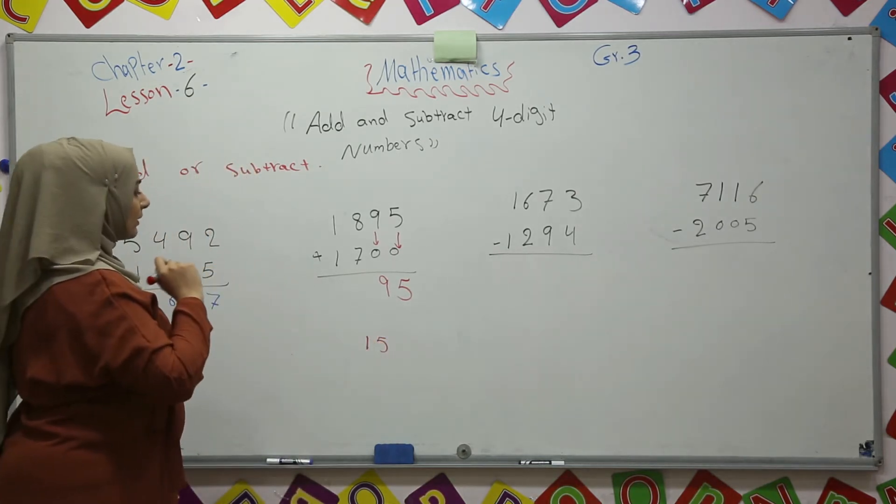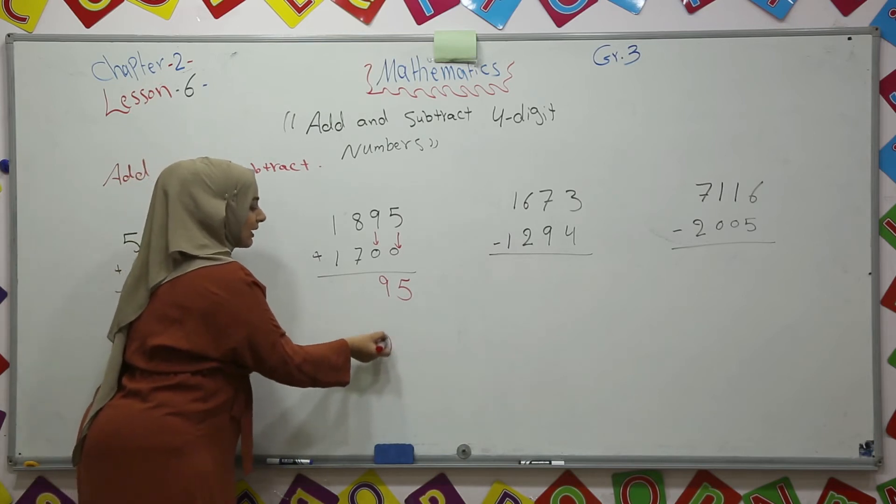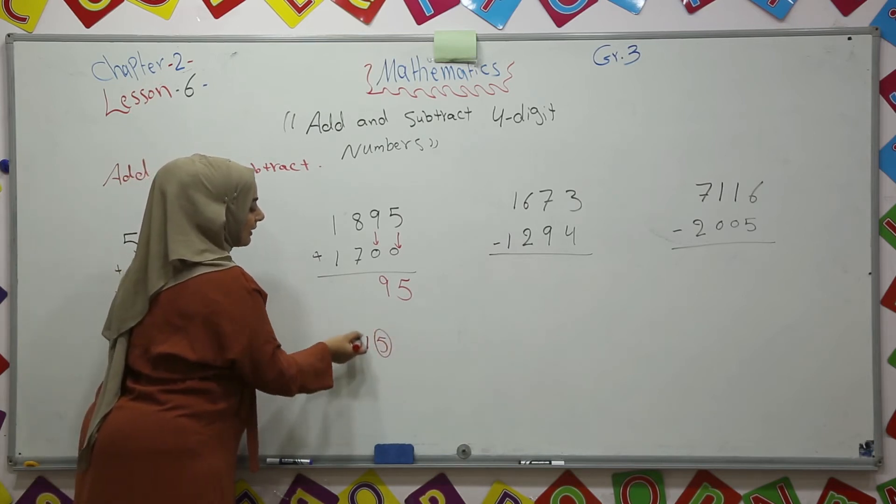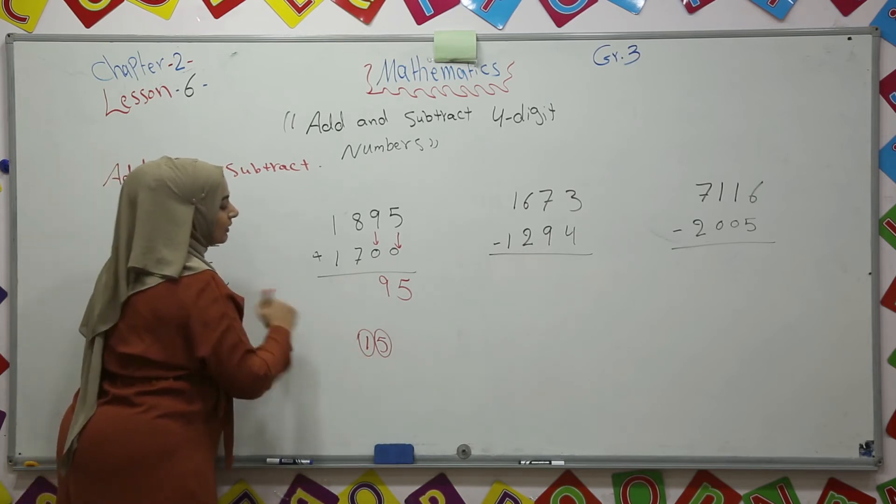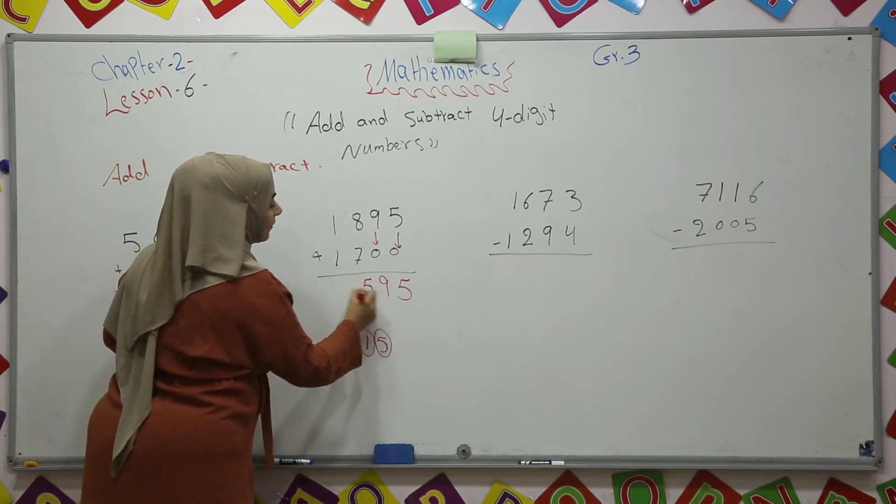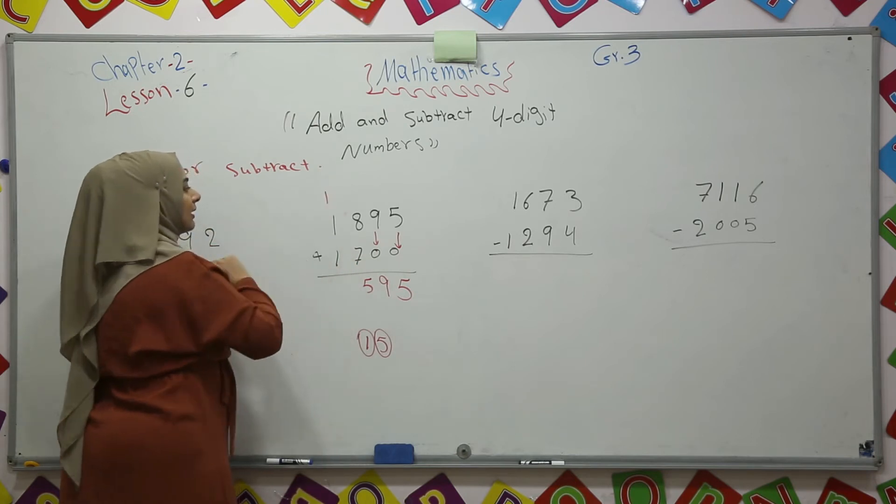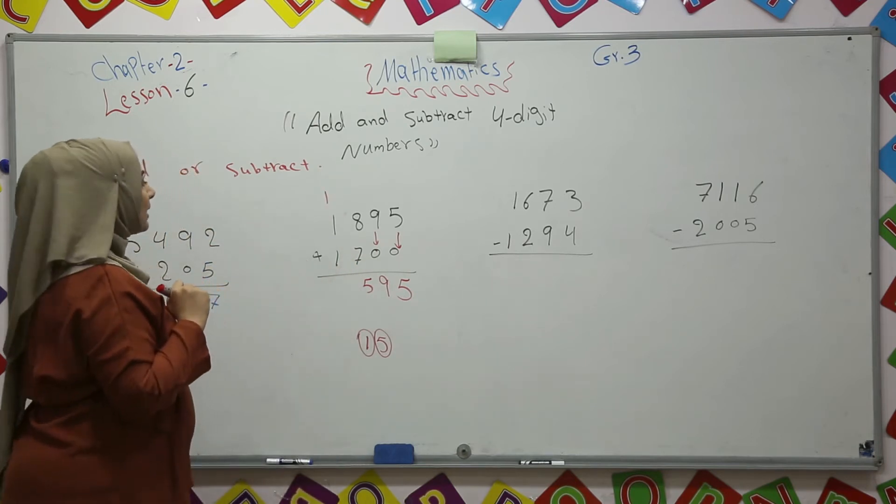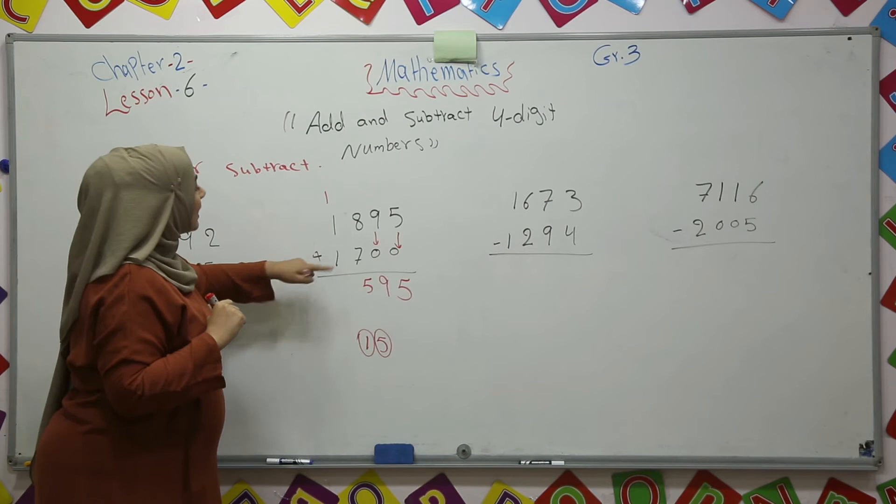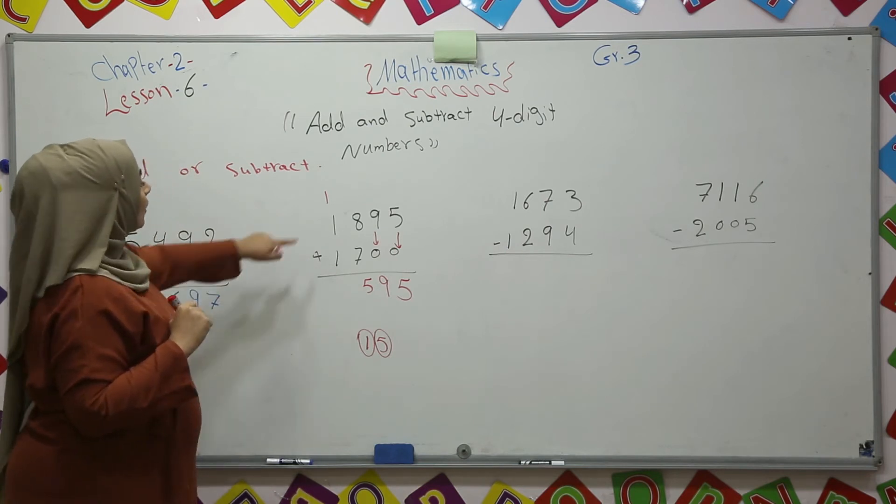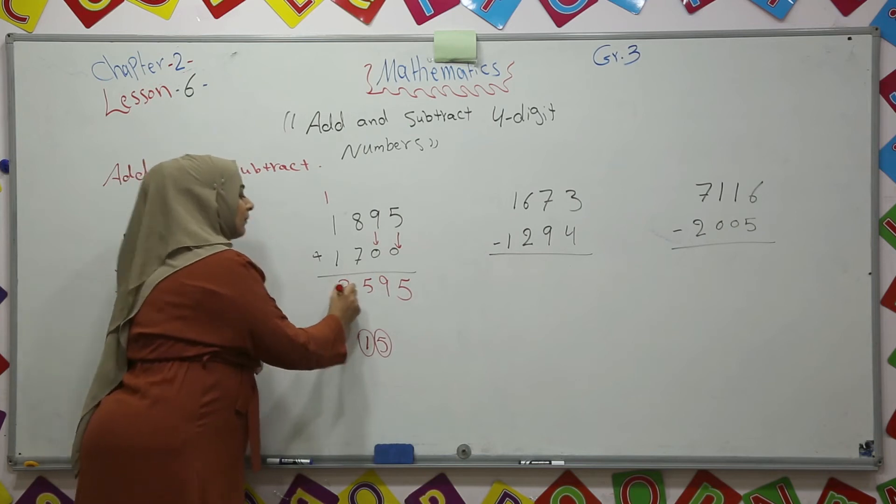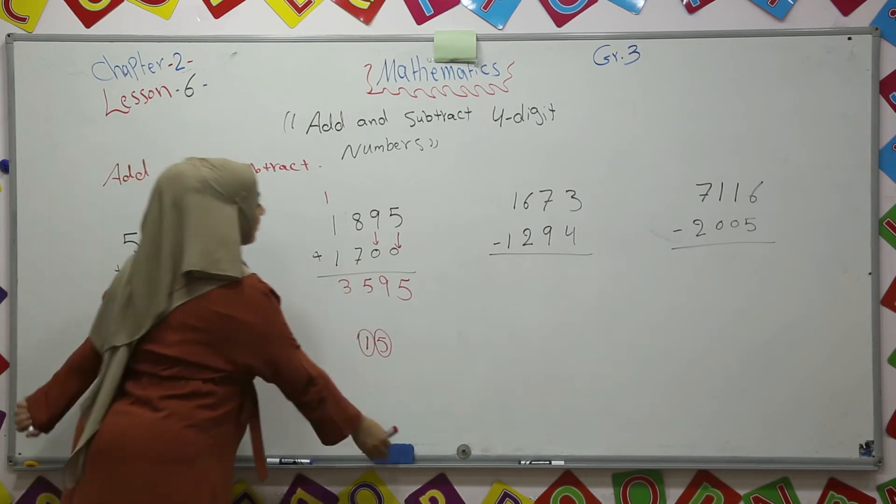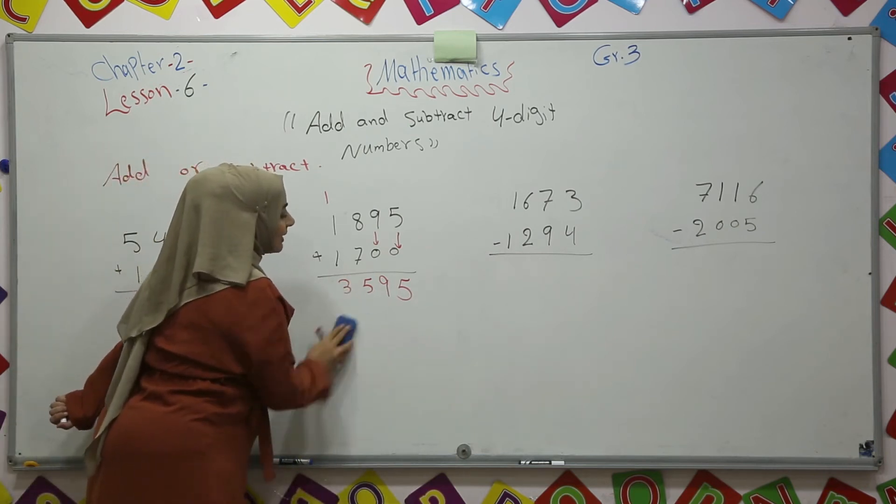I can regroup it as 500 and 1,000. I will write this 5 here and 1 in 1,000 place. Now I will add these numbers together. 1 plus 1, 2 plus another one, 3. So the answer is 3,595.